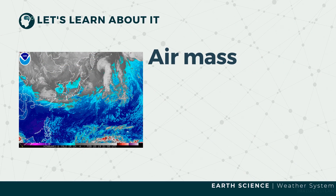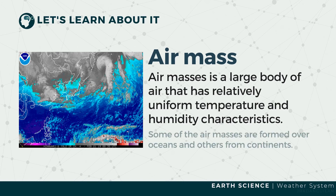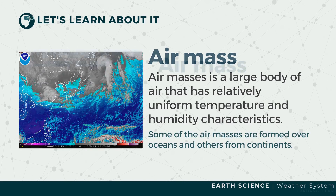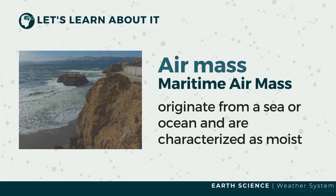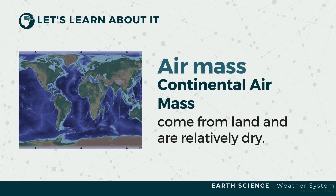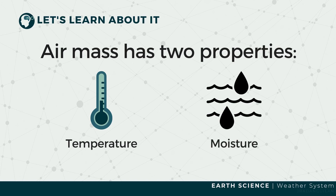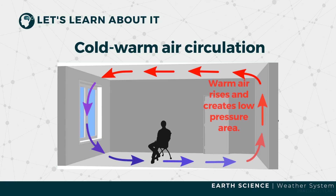But what's an air mass? An air mass is a large region of the atmosphere which shares the similar characteristics of its given area. Air masses originating from sea or ocean are called maritime air masses, and are characterized as moist. Air masses coming from land are relatively dry and are called continental air masses. The main properties of air masses are air temperature and moisture. Warm air, which rises, creates a low pressure area. Cold air, which sinks, creates a high pressure area. The difference in pressure makes air move from high to low pressure areas, which then creates wind.